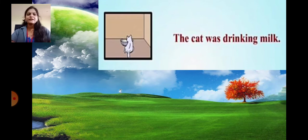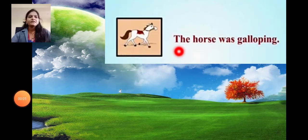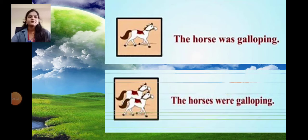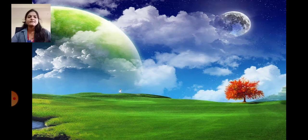For example: the cat was drinking milk. Here only one cat is there — singular — so we used was. Here two cats are there — plural — so we used were. The same way: the horse was galloping, the horses were galloping. Here only one horse, so we used was. Here more than one horse — two horses — so we used were.